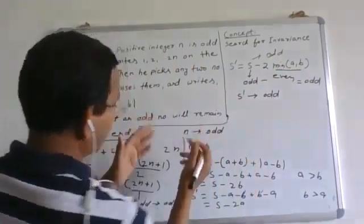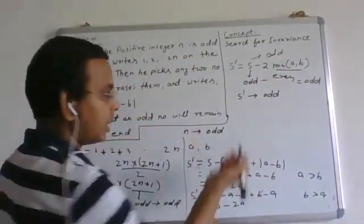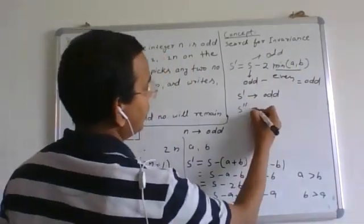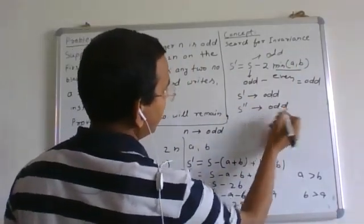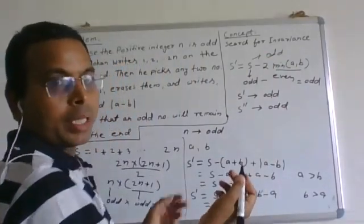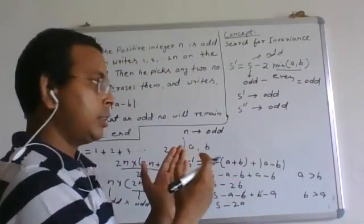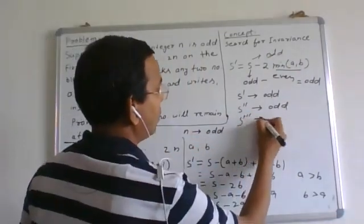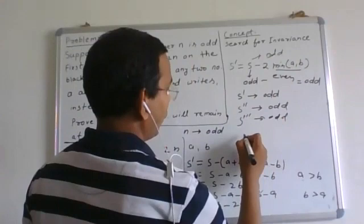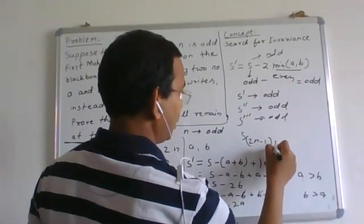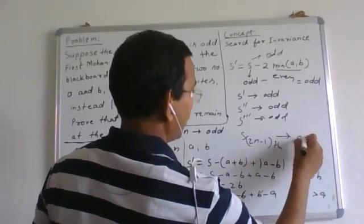Earlier s was odd and s dash again remains odd. Now suppose he is repeating this process again. So s double dash in second condition will be again odd. Third time, again he picks two numbers and replaces it by its modulus. So third time again will be odd. So finally s 2n minus 1th time will be odd.